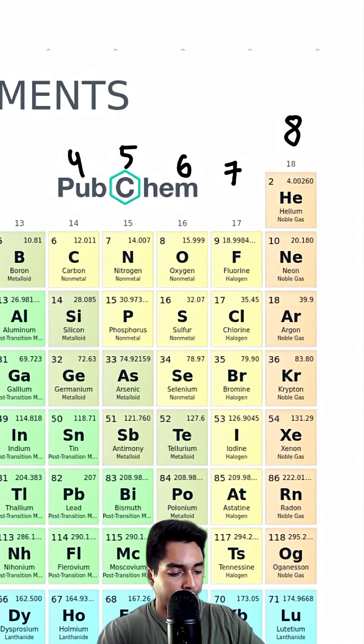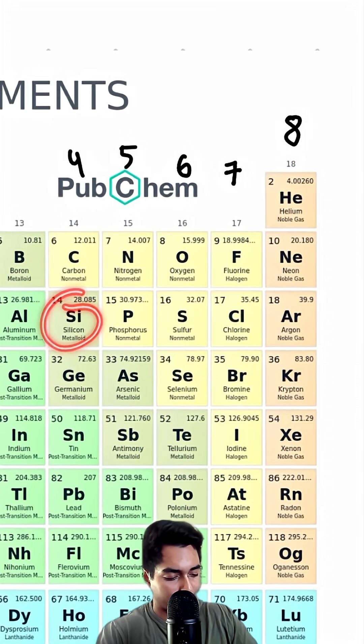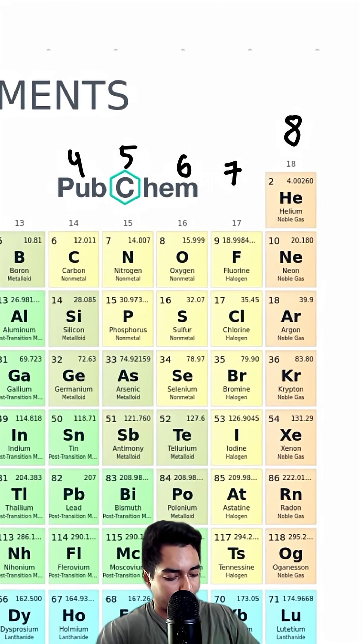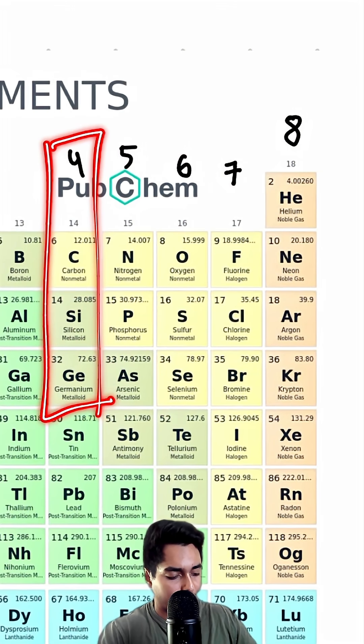And then finally, four. Notice that silicon lives right over here. This column - all of these elements have four valence electrons. So silicon has four.